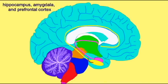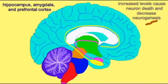When high levels of glucocorticoids are released chronically, this increases the levels of nerve cell death in these areas and decreases the rate at which new nerve cells are generated.